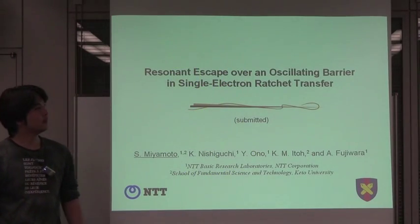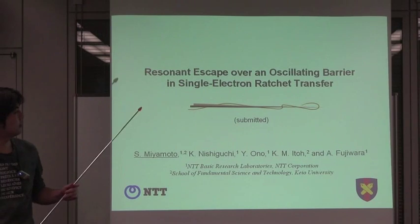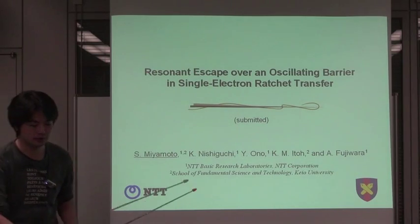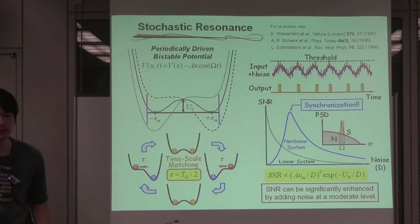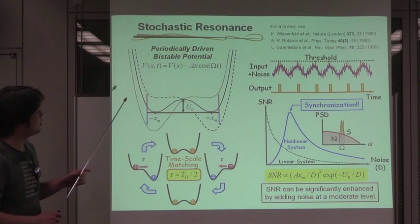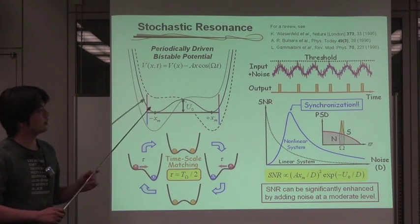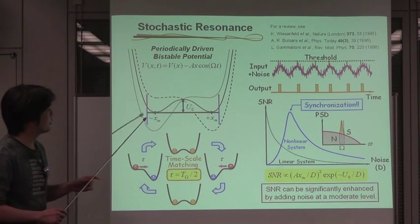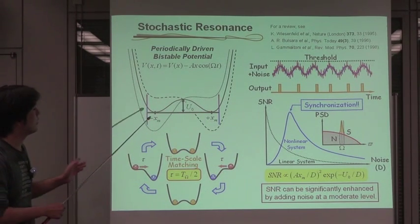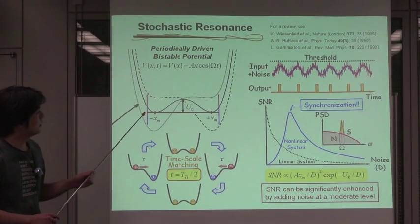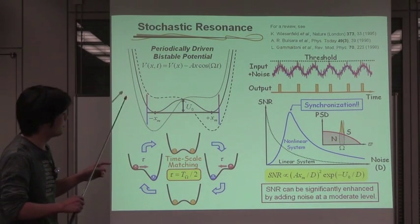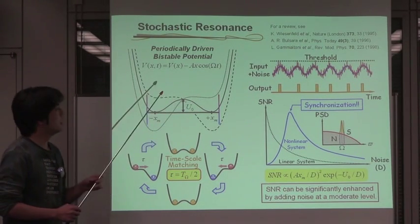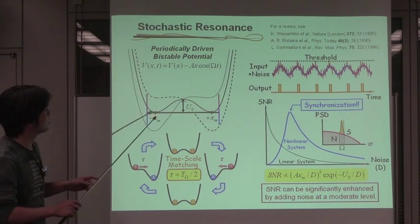I'm Satoru Miyamoto. In this paper, we present the resonant escape over an oscillating barrier in single electron ratchet transfer. We consider the Brownian particle asymmetry crossing between two stable potentials which is subject to periodic and symmetric perturbations. The particle in such metastable potential is a typical model of the switching device.